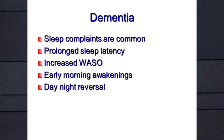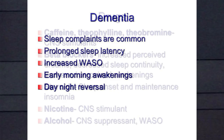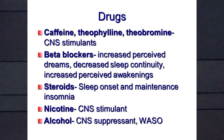Depression can be confused with advanced sleep phase syndrome because of early morning awakening. SSRIs improve subjective sleep but impact sleep negatively — they suppress REM and decrease sleep continuity. Dementia — sleep complaints are very common. There's prolonged sleep latency, increased wakefulness after sleep onset, and early morning awakenings. As the disease progresses, you get a complete reversal of day and night — asleep during the day and awake at night. My mother had Alzheimer's dementia and at the end was waking up at night and wandering — terrible for her, for us, and for her caregivers.